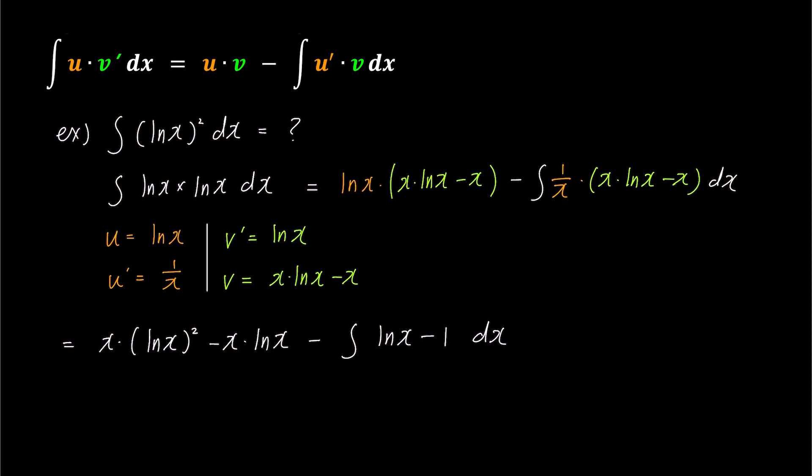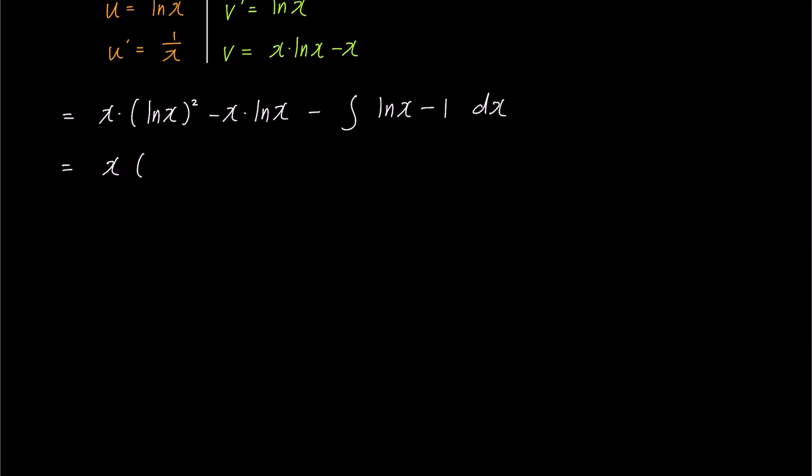Now let's expand the right-hand side of the integral into two separate integrals: x times ln(x) squared minus x times ln(x) minus integral of ln(x) dx plus integral of 1 dx. Using the previously found integral result for ln(x), this expression simplifies to x times ln(x) squared minus x times ln(x) minus parenthesis x times ln(x) minus x plus x plus c.